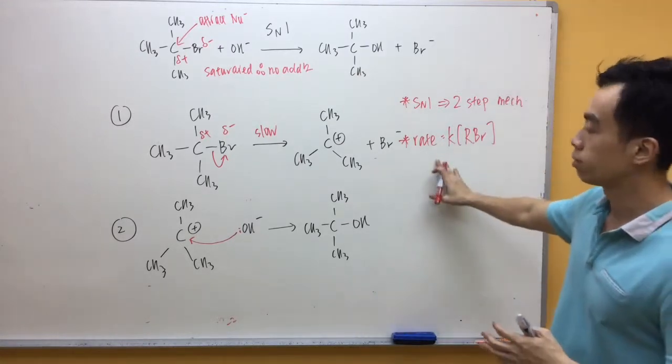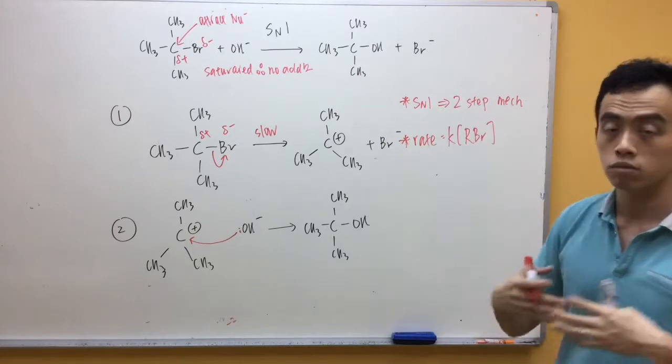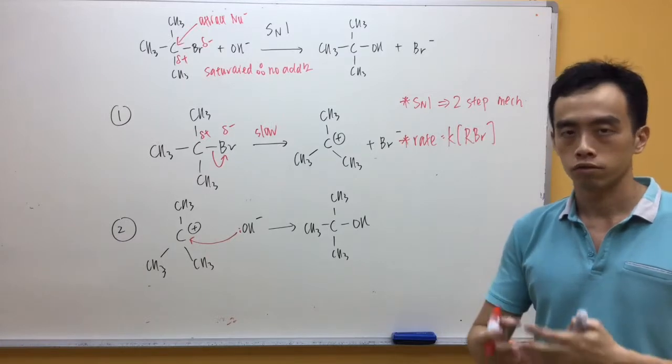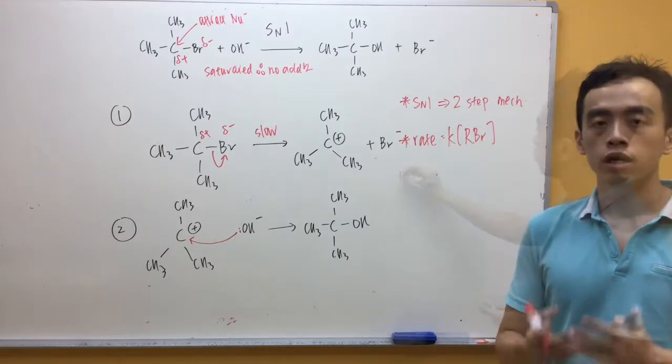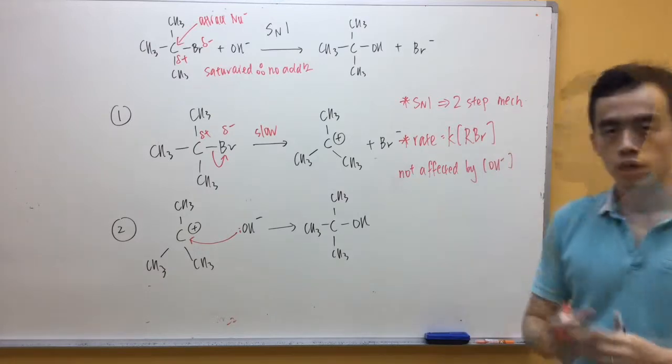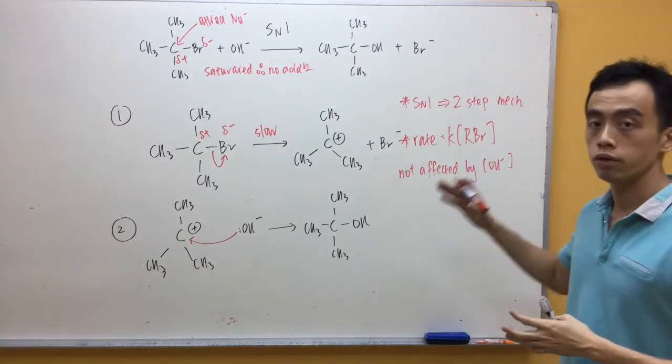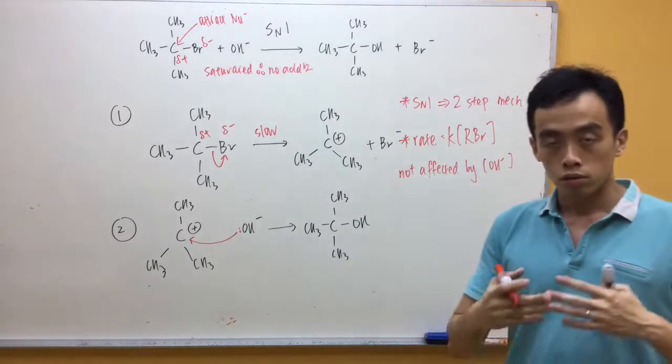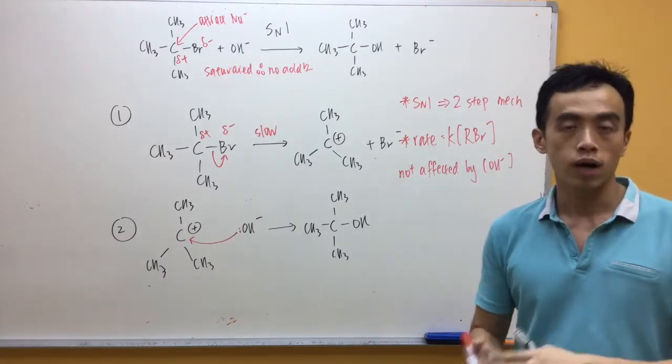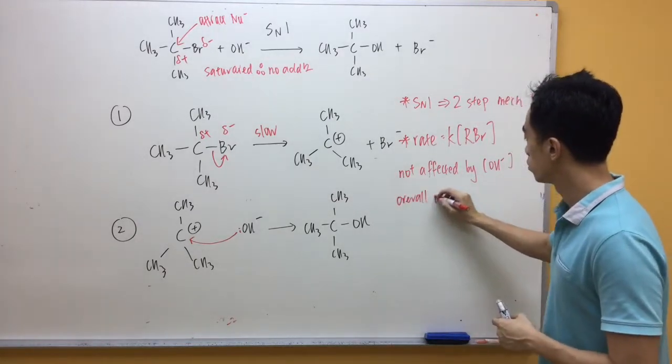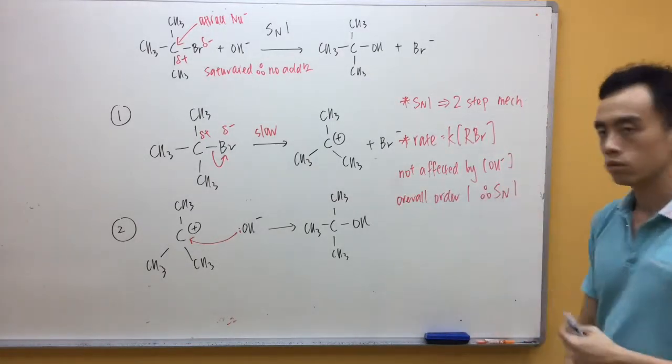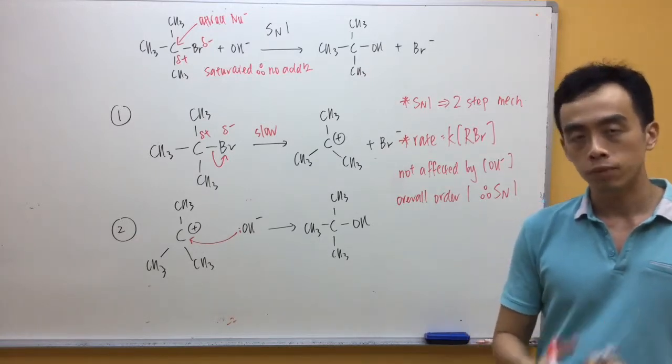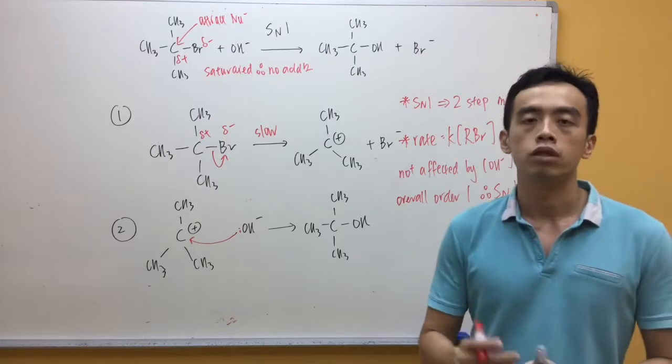What I notice is from my rate equation, I can have some deductions. The first thing is the rate of the reaction is independent of the concentration of OH⁻. Another idea we can get from our rate equation is this is an overall order 1 reaction. Therefore, it's considered as an SN1 mechanism. Basically, the number 1 means that the overall order of this particular mechanism is overall order 1.